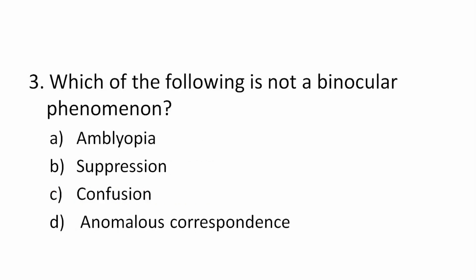Question 3: Which of the following is NOT a binocular phenomenon? Options: amblyopia, suppression, confusion, anomalous correspondence. The correct answer is amblyopia — it is a uniocular condition. Suppression, confusion, and anomalous correspondence are all binocular vision phenomena. Amblyopia is uniocular.